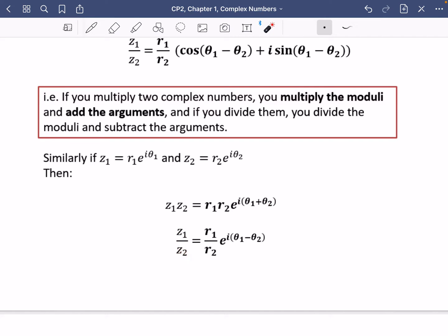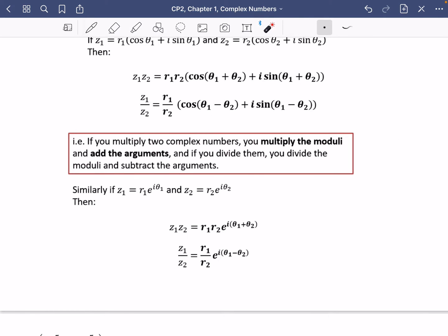And similarly, when you're dividing two numbers, you would divide these R1 divided by R2. And if I was going to do e to the i theta 1 divided by e to the i theta 2, you know that you would be subtracting the powers with index laws. And again, you get the same results of the arguments being subtracted. So nothing really new here, apart from the fact of this exponential form that we've got.